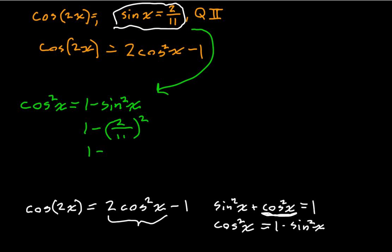What's that going to be? 1 minus 4 over 121. We can simplify this further. I'm going to write this as 121 over 121 minus 4 over 121. That's going to be 117 over 121. So this is going to be our cosine squared of x.